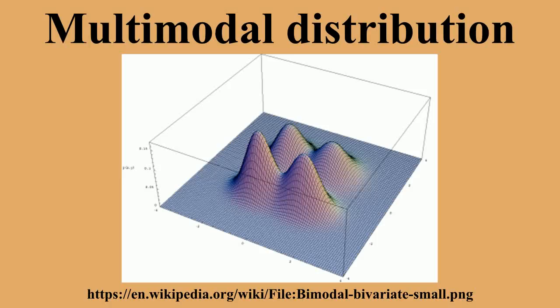In statistics, a bimodal distribution is a continuous probability distribution with two different modes. These appear as distinct peaks in the probability density function, as shown in figure 1. More generally, a multimodal distribution is a continuous probability distribution with two or more modes, as illustrated in figure 3.